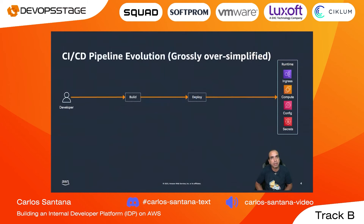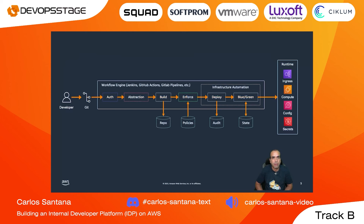We start with the CICD pipeline evolution. This is kind of where everybody starts, or has a baseline — where you have a developer that wants to build an application, deploy an application, and use cloud services to run it on something like AWS. We have different types of CICD pipelines, starting from Git. The developer saves code and configuration in Git, and then uses a CICD pipeline — a workflow engine. Things like Jenkins have been around for a while. GitHub Actions are newer, and in AWS we have CodePipeline and CodeBuild.